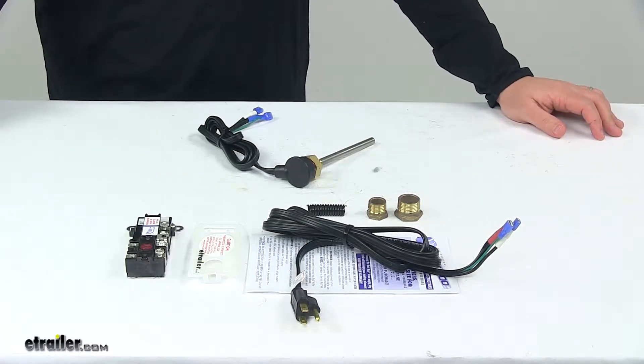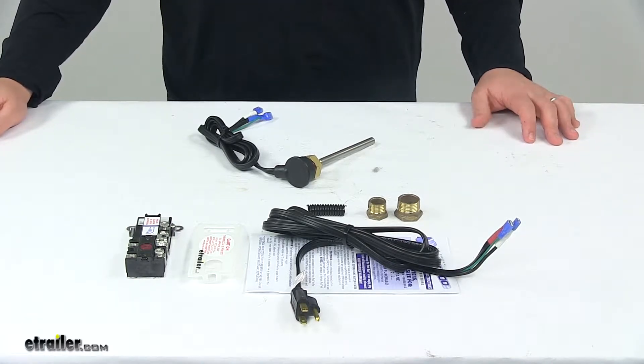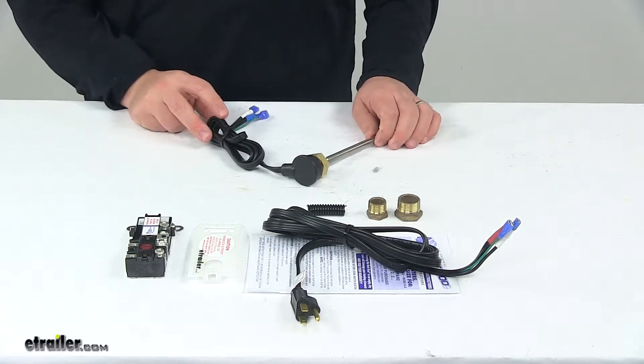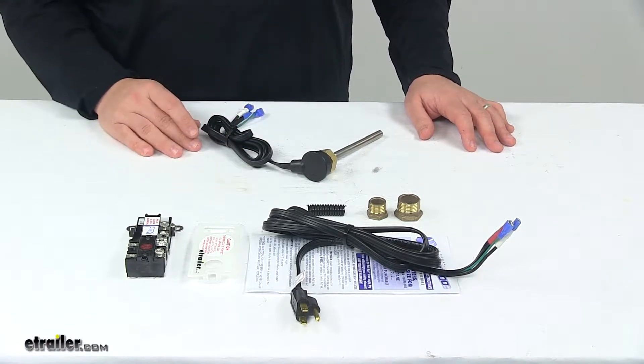Today, we're taking a look at the Universal Hot Rod Water Heater Conversion Kit, propane to electric. This conversion kit helps save propane in your RV or camper. It simply converts a propane water heater to electric operation and includes the necessary hardware to make the conversion.